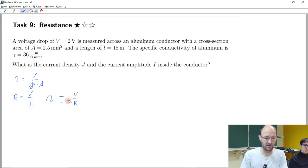And how do we get current density? This J, current divided by cross-section area.